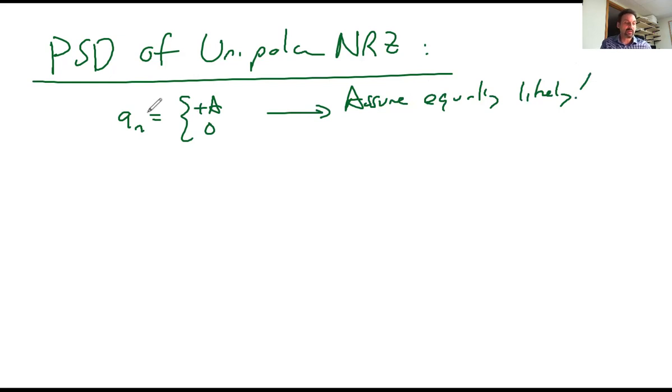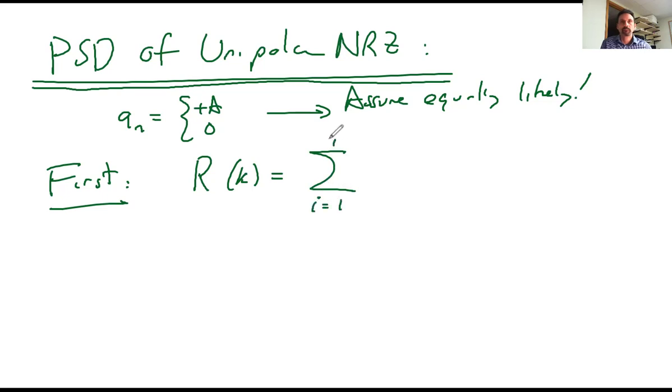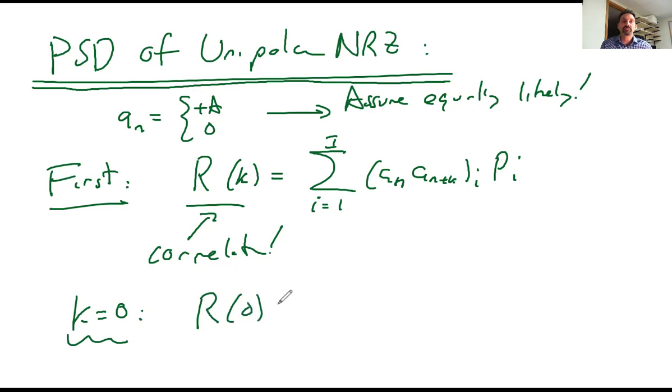So what does that mean? Let's go and use that expression, this guy here. So first, let's calculate R of K. So it's going to be R of K is equal to, so again, this guy here is a correlation operator. So we actually have two scenarios here. What happens is we have when K is equal to zero. So let's look at that guy. So that means R of zero is equal to what?